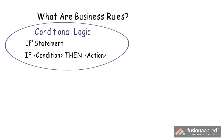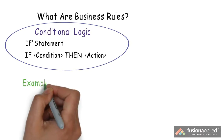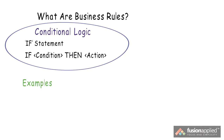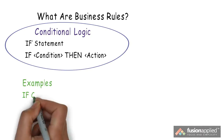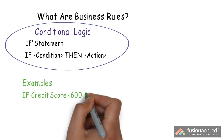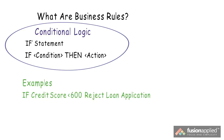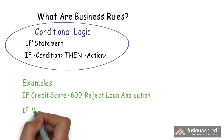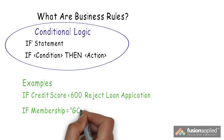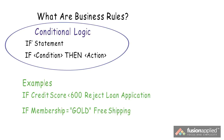Let's look at a couple of examples. For example, if credit score is less than 600, reject a loan application. Or if membership equals gold, offer free shipping.